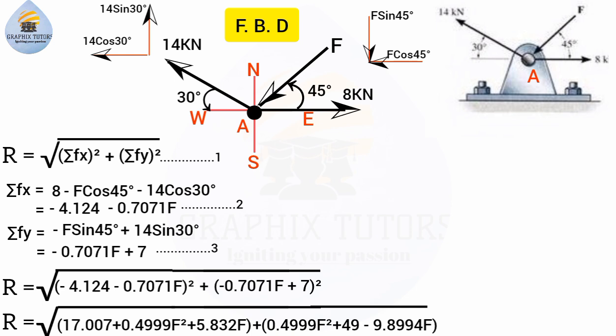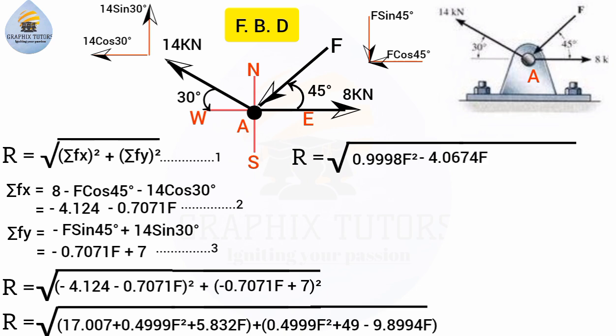Collecting like terms: for F² terms: 0.4999F² + 0.4999F² = 0.9998F²; for F terms: 5.832F − 9.8999F = −4.0674F; for constants: 17.007 + 49 = 66.007. So R equals the square root of (0.9998F² − 4.0674F + 66.007).